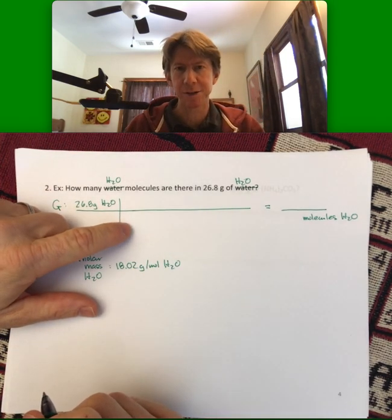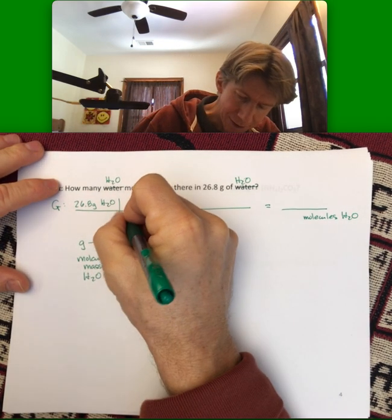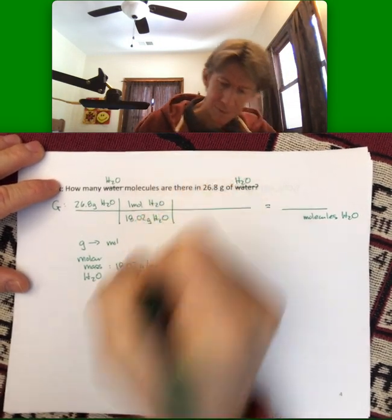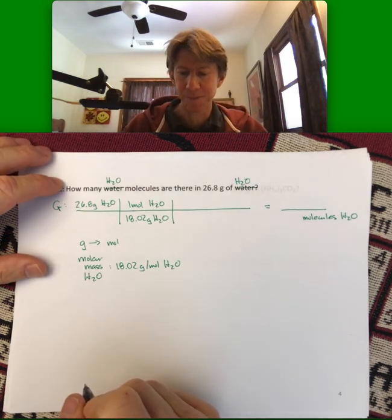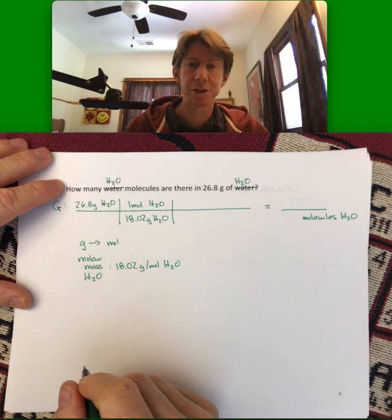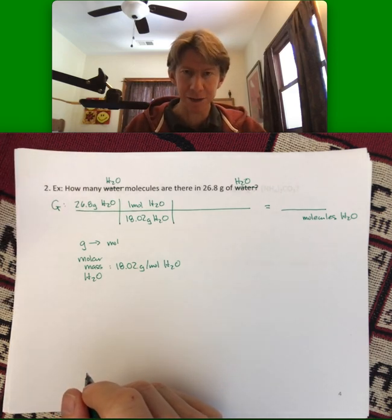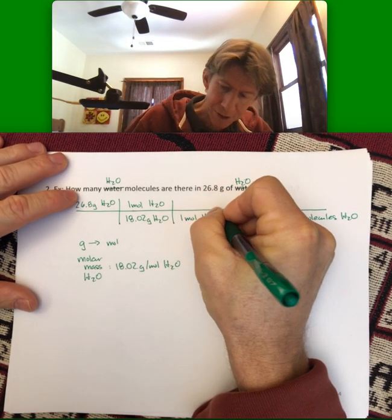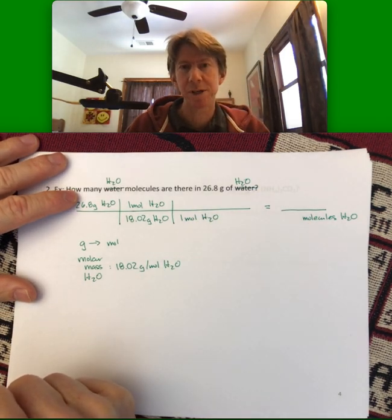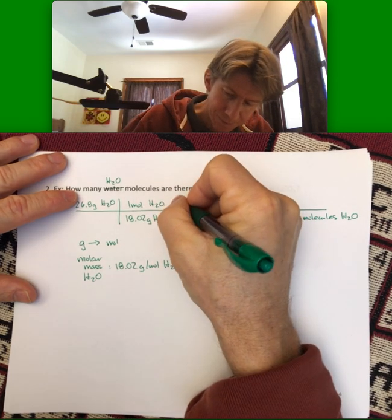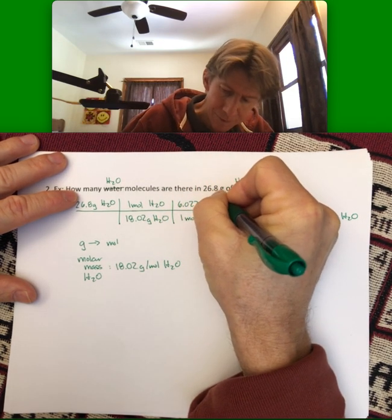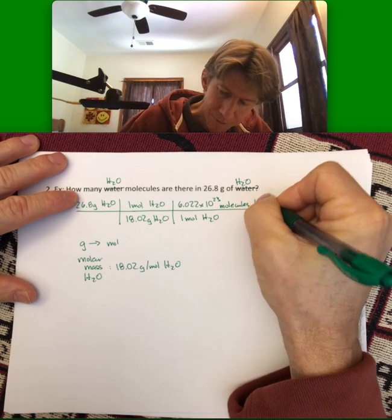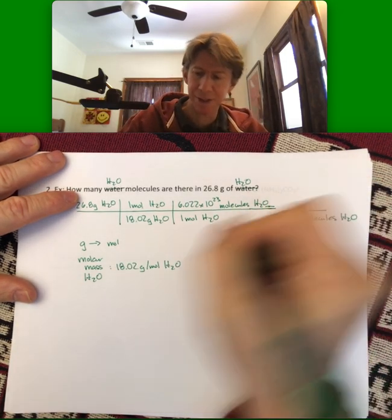With my grams going on the bottom and my moles going on top to cancel. And now, similar to the last problem, we're going to have a conversion from moles to, in this case, molecules using Avogadro's number. So one mole of anything, including H2O, is 6.022 times 10 to the 23rd. Since these are molecules, I'll put molecules here.